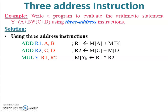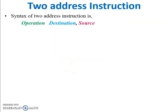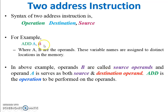The syntax of a two address instruction is: operation, destination, and source. In two address instruction there is only one source, unlike three address which has two sources. For example: ADD A, B — where A and B are operands assigned to distinct locations in the memory. Operand B is called the source operand.